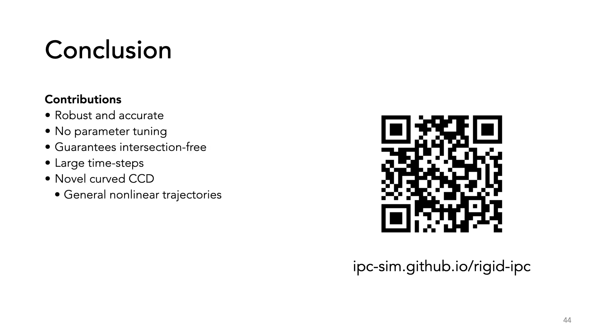To conclude, our work is the first fully implicit method for rigid bodies with contact which guarantees non-intersection. It is robust and accurate with no parameter tuning, guarantees intersection-free configurations at every step, and is capable of taking large time steps. To do this, we propose a novel curved CCD that can be applied to any non-linear trajectories.